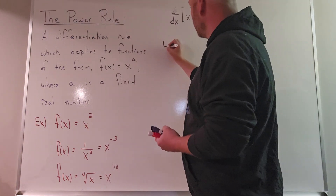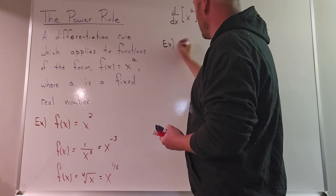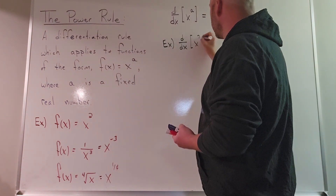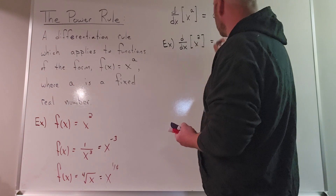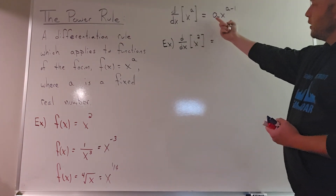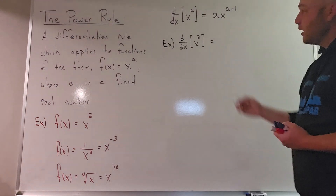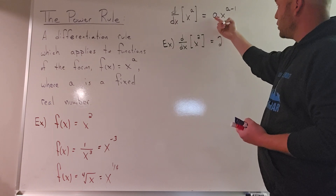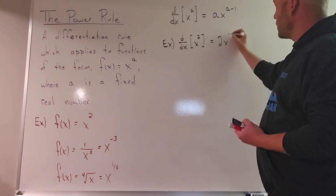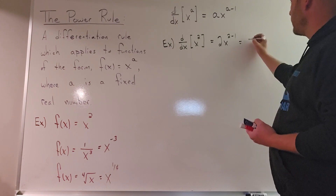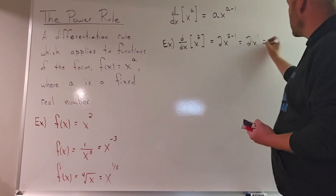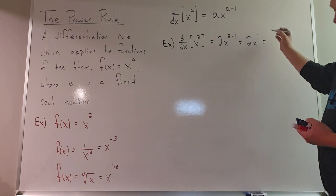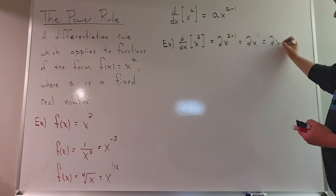First example: the derivative of x squared. The 2 plays the role of a, so following the format this would be 2x to the 2 minus 1. 2 minus 1 is 1, meaning this is 2x to the first. Of course, an exponent of 1 we traditionally don't write, so this simplifies to 2x.